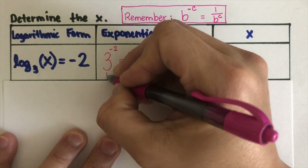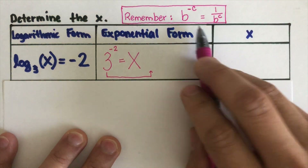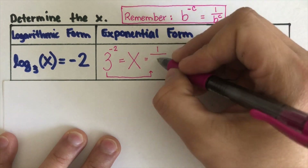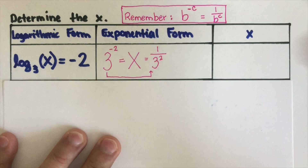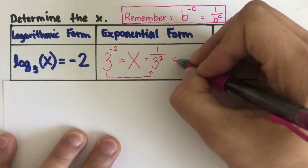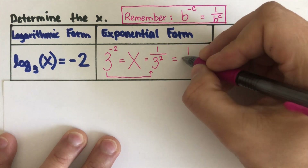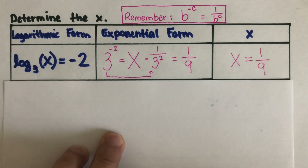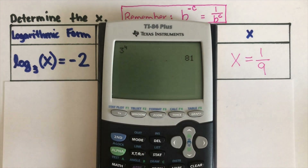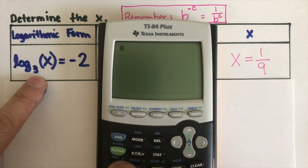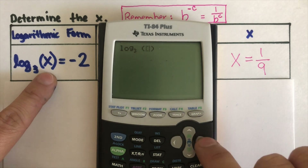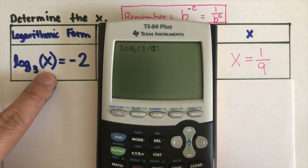How do we simplify this using the negative exponent rule? This can be rewritten as 1 over 3 squared, which simplifies to 1 over 9. So our x is 1 over 9. Let's plug this into the calculator. Setting up log base 3 of 1 divided by 9, the answer is negative 2. So x is 1 over 9.